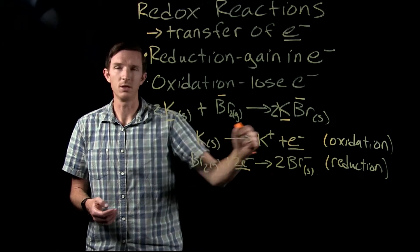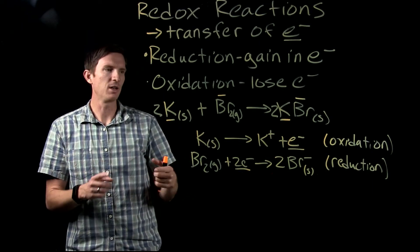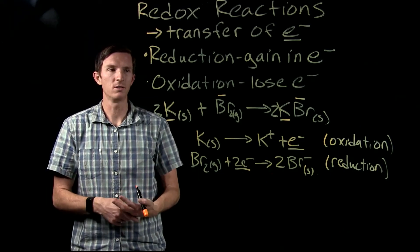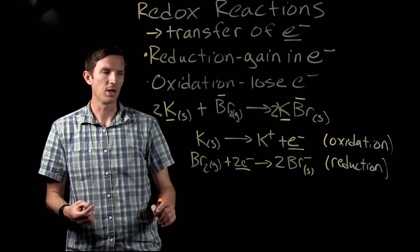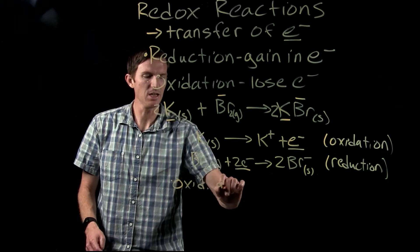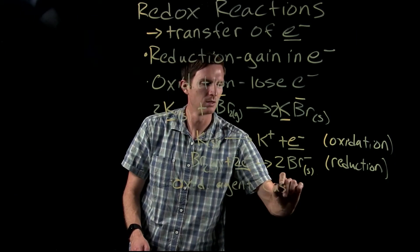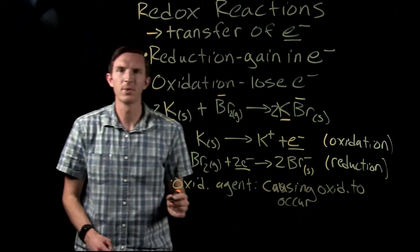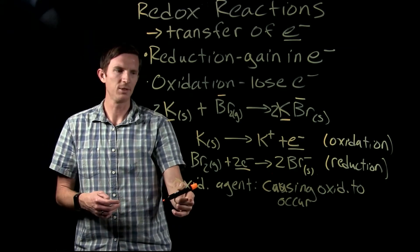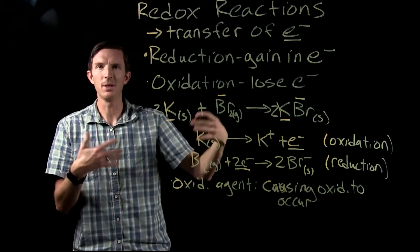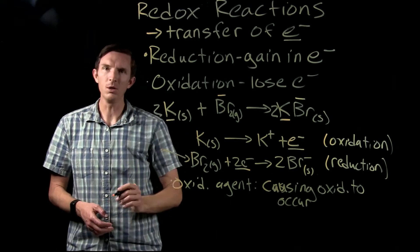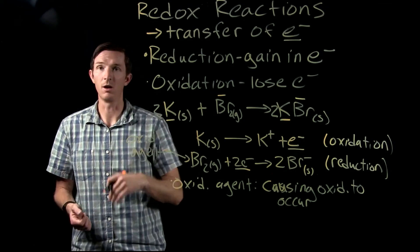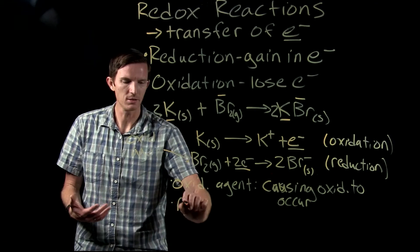We call this a redox — reduction-oxidation — reaction. We can identify what's being oxidized by whatever loses electrons and what's being reduced by whatever gains electrons. We can also discuss the oxidizing agent and the reducing agent. An oxidizing agent is a substance that causes oxidation to occur in something else. Our potassium is being oxidized, and what's causing that is its reaction with bromine — so Br₂ is our oxidizing agent.